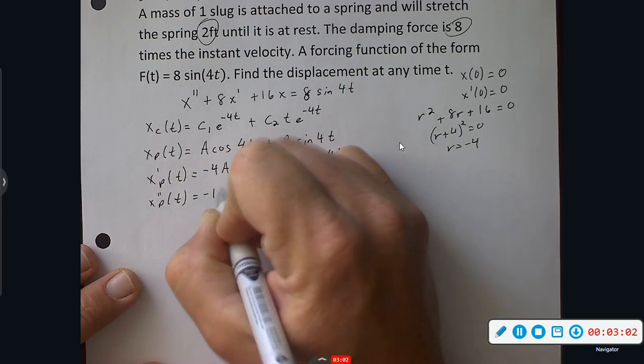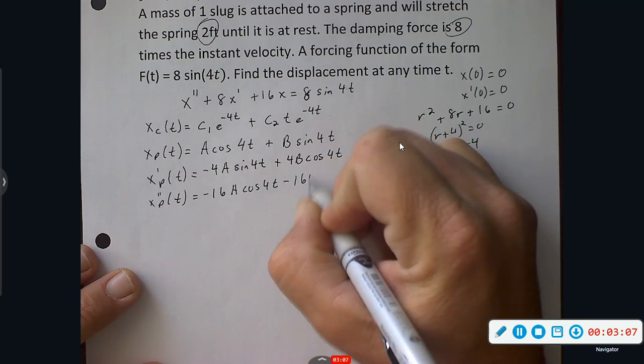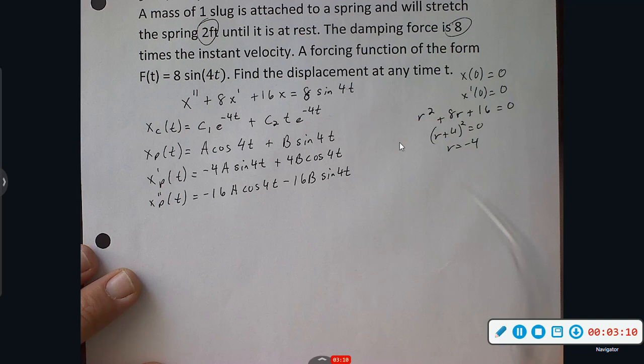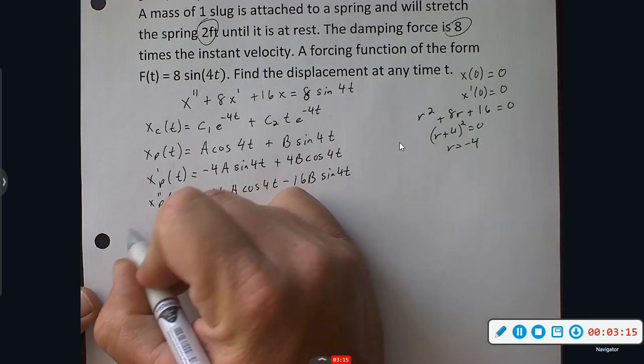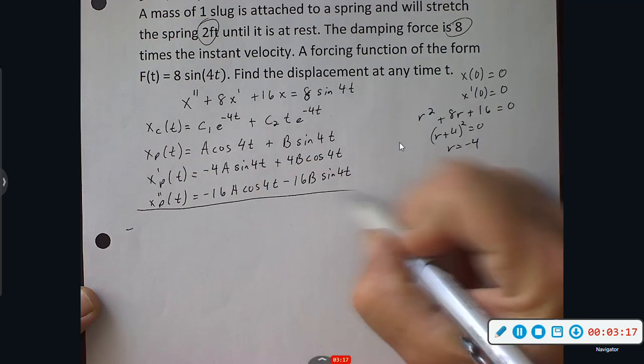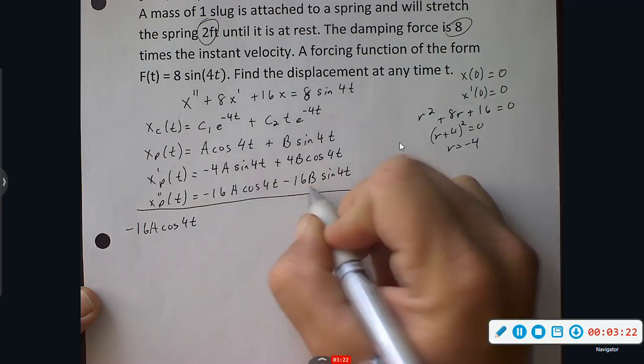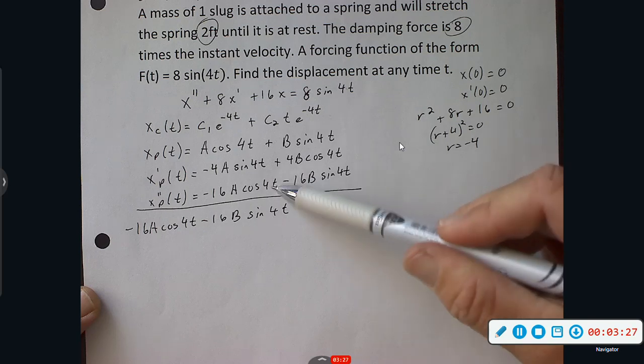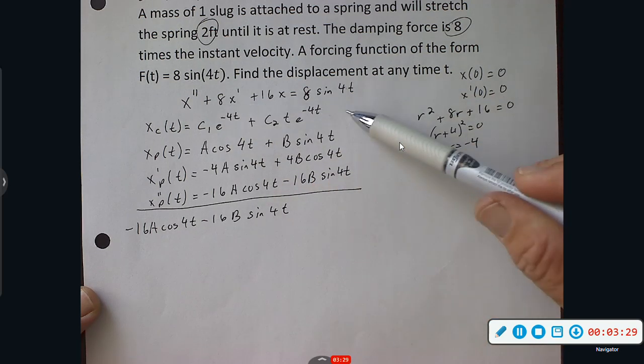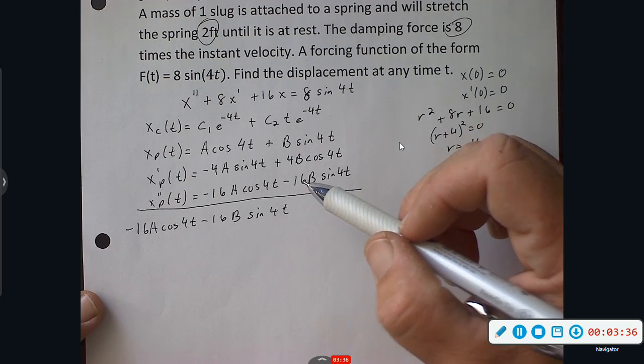Second derivative, 16, so negative 16A cosine 4T. Again, turning to negative, negative 16B sine 4T. Again, if you didn't know, I'm plugging these in back into our original differential equation so we can get a model for our displacement.